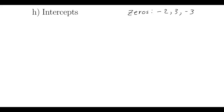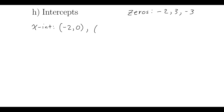Let's find the x and the y-intercepts of the function given above. We're going to use the zeros that we just found to list out our x-intercepts. Remember, that's always going to be the zero given, comma, zero. And there are my three x-intercepts — very easy once you find the zeros.